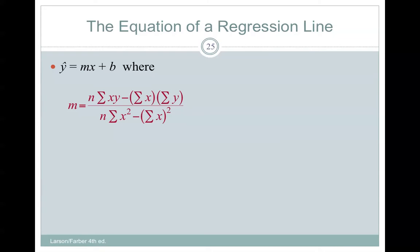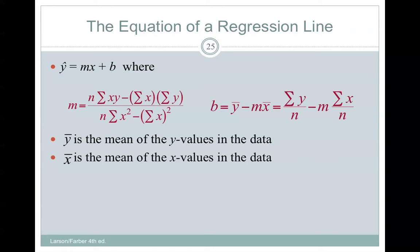You can find the slope with this equation, but we're going to use Excel to do this for us. But y bar is the mean of the y values, x bar is the mean of the x values. You can practice that on your own if you would like. The regression line always passes through the point x bar, y bar.